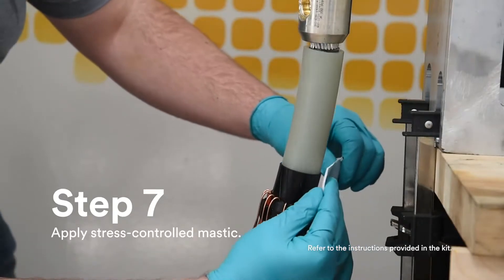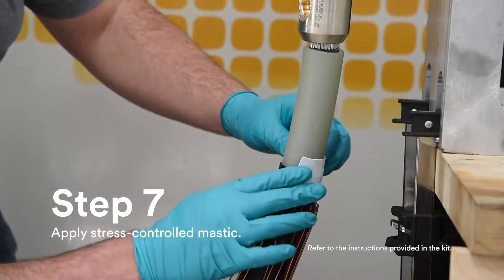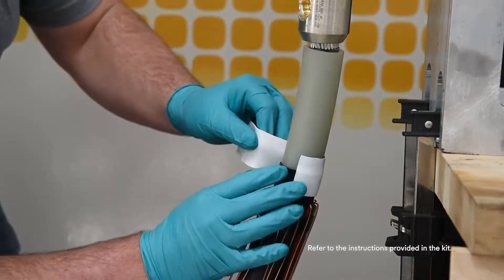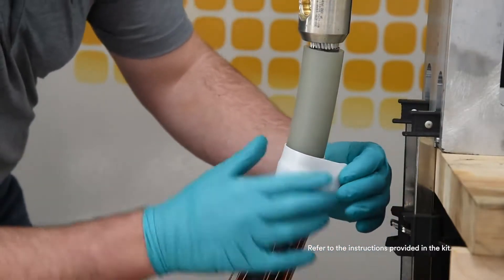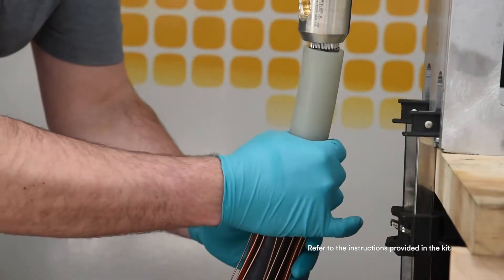Apply supplied stress control mastic centered over the edge of semiconductive shield cutback. Apply the mastic with light tension so it slightly stretches and completely wraps the cable.